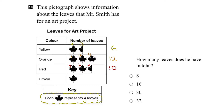Now let's look at the number of brown leaves. We just have the one leaf showing here, and that again represents four leaves, so the grand total for the number of brown leaves would be four.